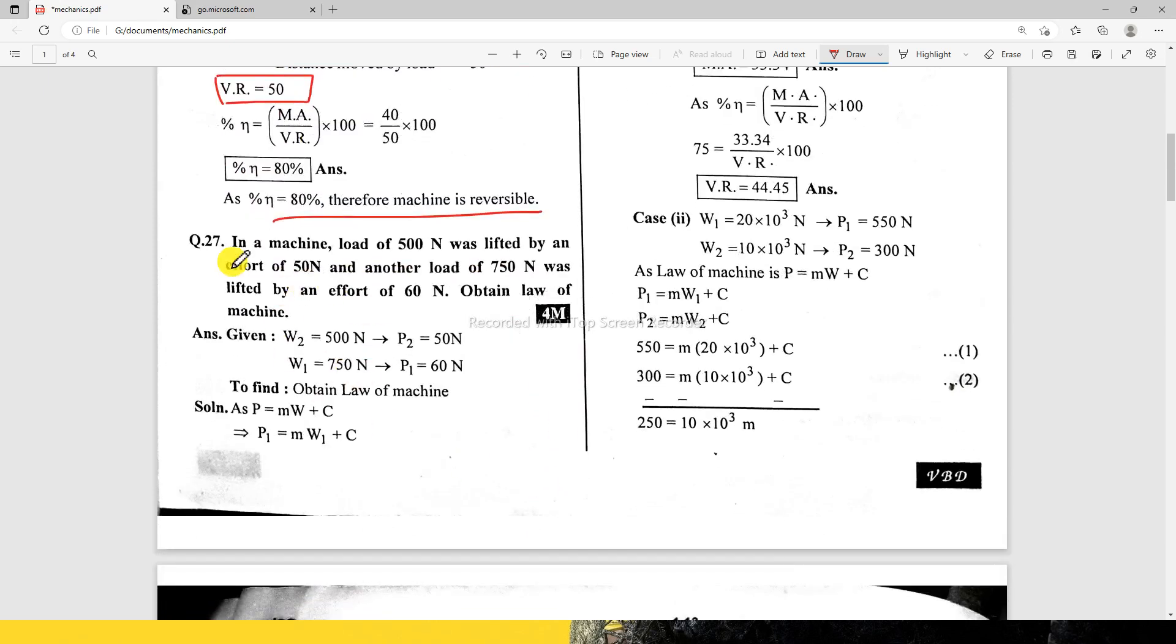Next, in a machine load of 500 Newton was lifted by effort of 50 Newton, and another load of 750 Newton was lifted by effort of 60 Newton. Obtain law of machine. So given, W2 equals 500 Newton, P2 equals 50 Newton, and W1 equals 750 Newton, P1 equals 60 Newton.